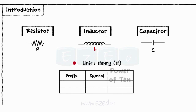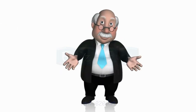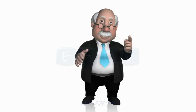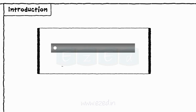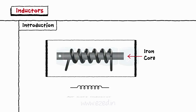Practically, Henry becomes a very large unit. We generally use smaller units like milli-Henry or micro-Henry, which are one thousandth and one millionth part of a Henry respectively. The material on which the coils are wrapped is called the core of an inductor. When the coil is wound on a metal, we get an iron core inductor. When there is no material and just circular windings, we get an air core inductor.